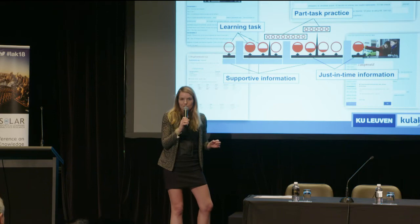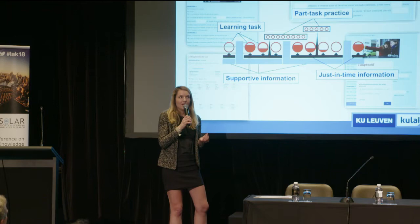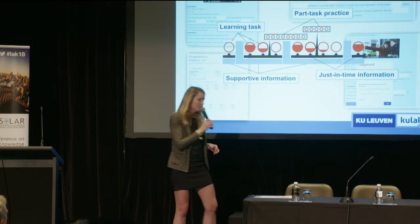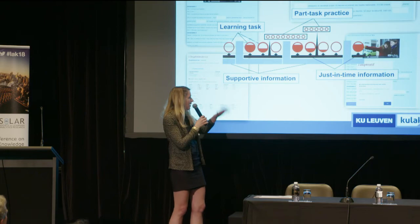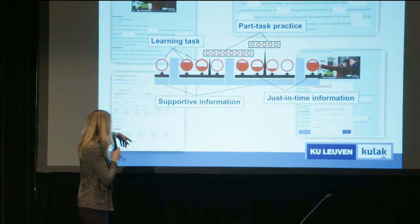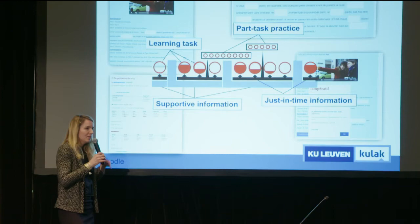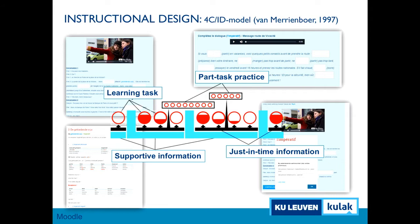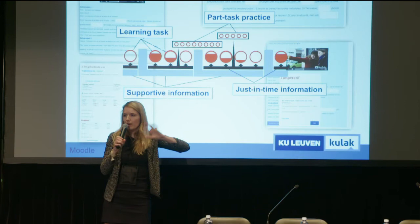If a student is doing a learning task and realizes he's lacking some knowledge — for instance, he's forgotten how to form the imperative — he can consult the just-in-time information, which is a clickable link with a pop-up grammar summary. If that's not enough, he can consult the supportive information, which is a more detailed theory on that specific topic. If a student wants to practice first, he can also choose to do part-task practice — a drill-and-practice exercise focused on one element, such as the imperative. The supportive information is always available and adapted to the specific learning task.